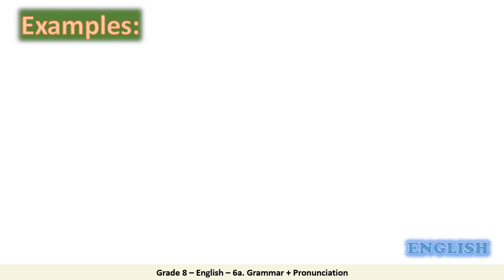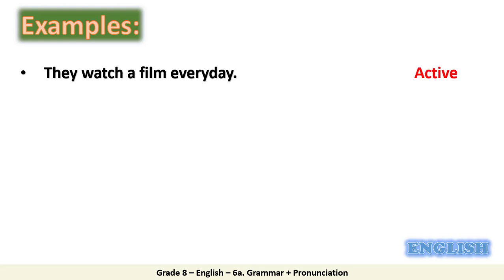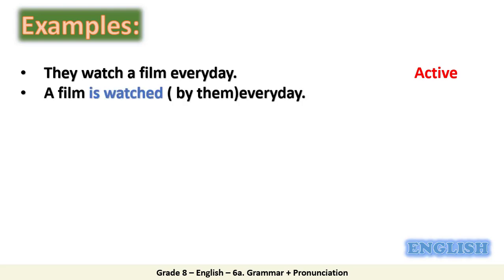Now let's look at example sentences in the active and passive voice. Look at the first sentence — is it active or passive? It is active. Look at the second sentence — is it active or passive? Passive. What is the subject of the first sentence? 'They.' What is the tense of the verb 'watch'? Present simple. What is the object? 'A film.' In the passive sentence, we begin with the object 'a film,' then use the verb 'to be' — 'is' because 'a film' is singular — then the past participle of the main verb 'watch,' which is 'watched.'